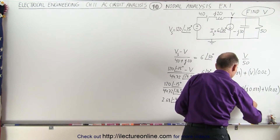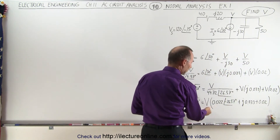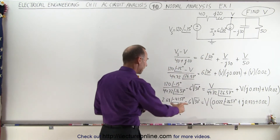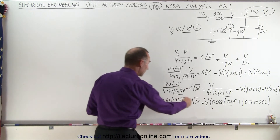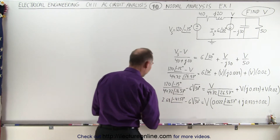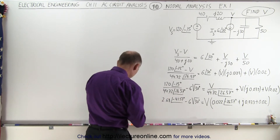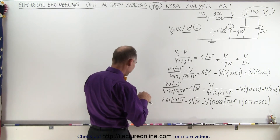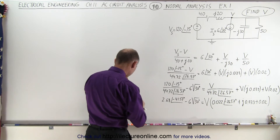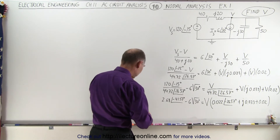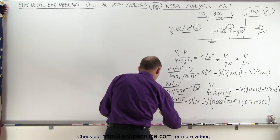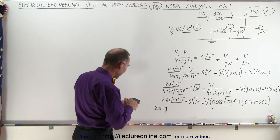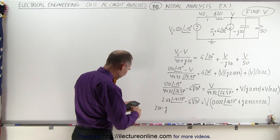Now we need to convert the left side into real and imaginary parts as well. So we have 2.68 — we take the cosine of 41.57 and multiply it times 2.68, that gives us 2.01. And that would be minus J — take the sine of 41.57, multiply it times 2.68, that gives us 1.78. Notice how we converted this into real and imaginary parts.